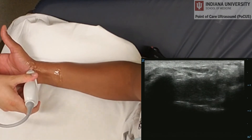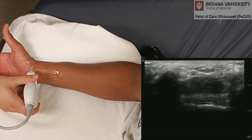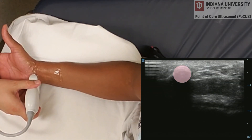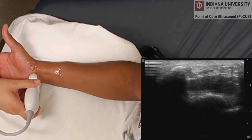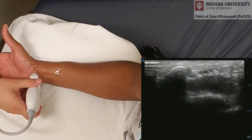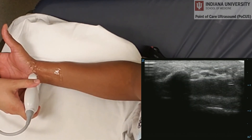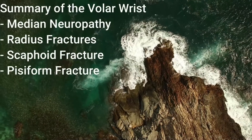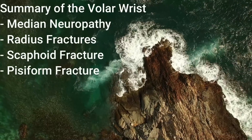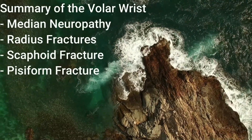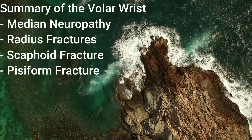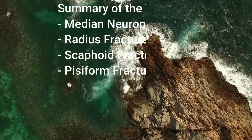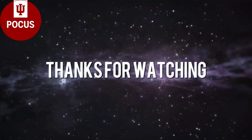Finally, on the ulnar side, we can look at the pisiform bone to see if there's any sign of fracture. That concludes the summary of the volar side of the wrist. Thank you for watching.